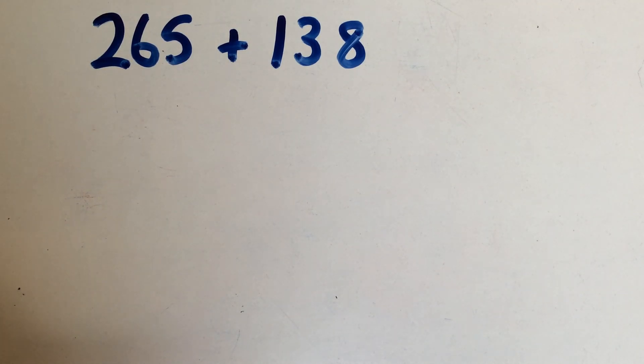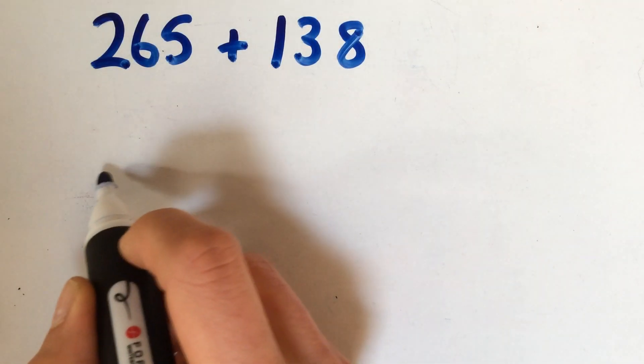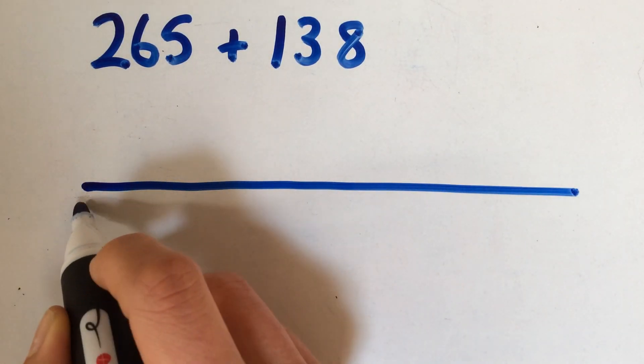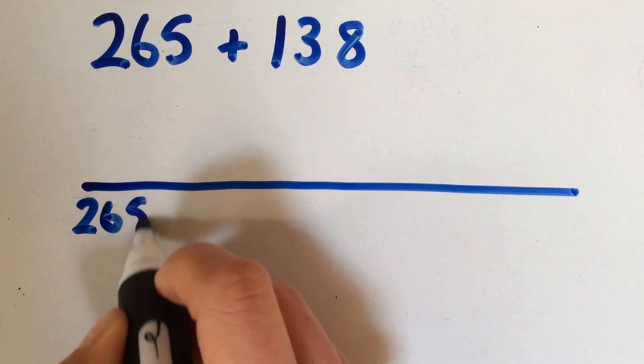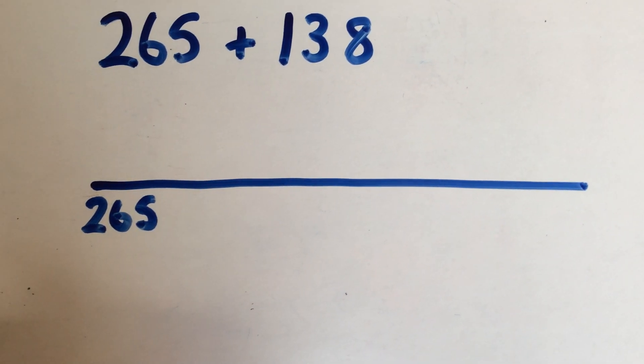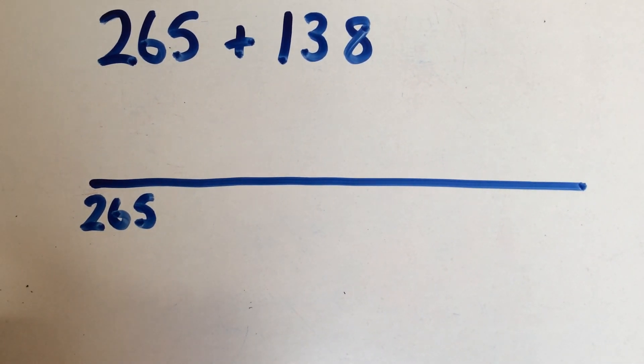At this point we would choose the larger number to start with, and on our number line we would put 265 at the start because that's the biggest number, so we're going to add on the smaller number to make it easier.